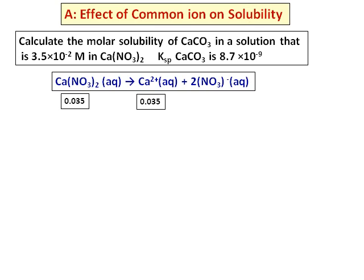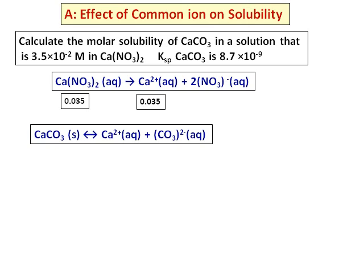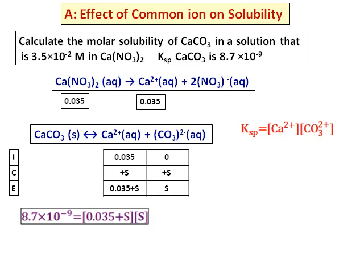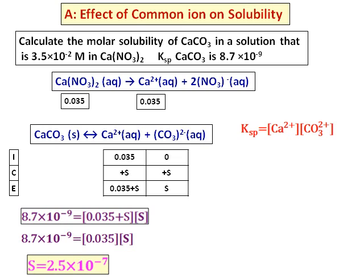The calcium carbonate equilibrium is also written. We set up the ICE table: initially, we start with 0.035 M calcium ions and 0 carbonate ions. The change is +S for both, giving equilibrium concentrations of (0.035 + S) and S. Substituting into the Ksp equation and solving gives a solubility S = 2.5 × 10⁻⁷ M.